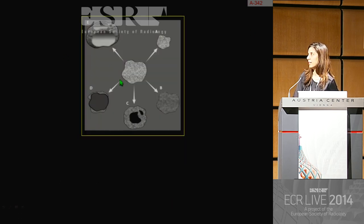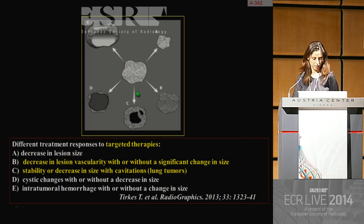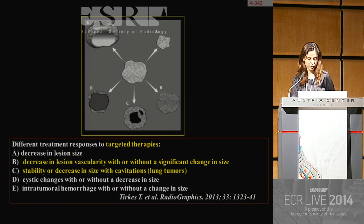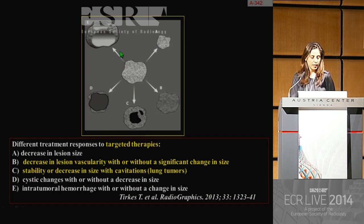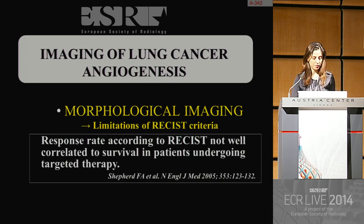Tumors treated by targeted therapy do not always show a reduction in size. In fact, there are different treatment responses to targeted therapies: decrease in size; decrease in lesion vascularity with or without a change in size; stability or decrease in size with cavitation; cystic changes with or without a decrease in size; intratumoral hemorrhage with or without a change in size. So the morphological imaging has some limitations, and response rate according to RECIST is not well correlated to survival in patients undergoing targeted therapy.